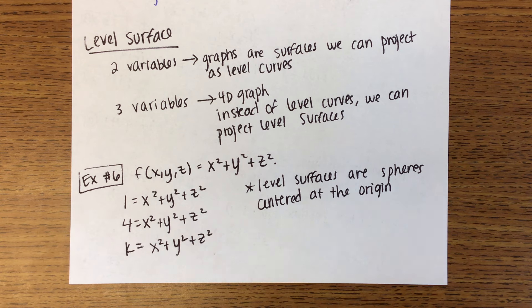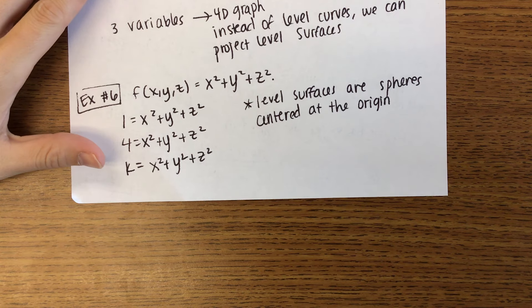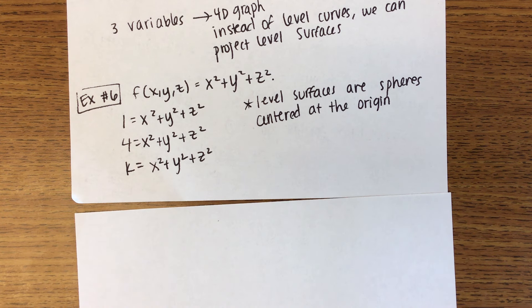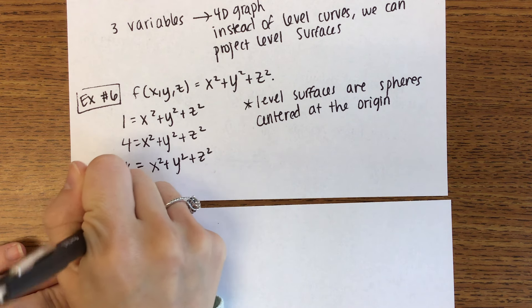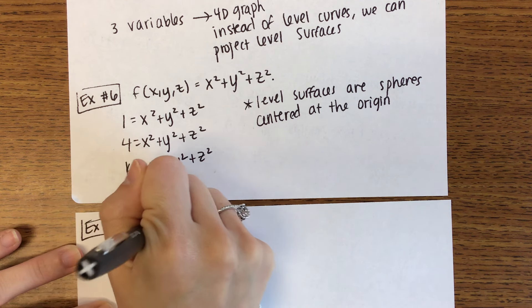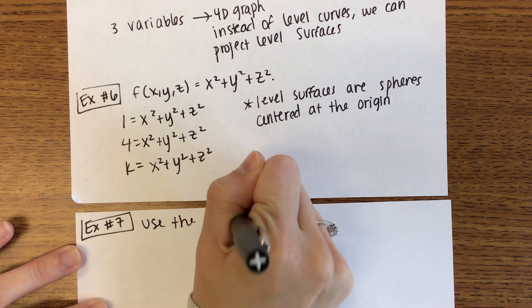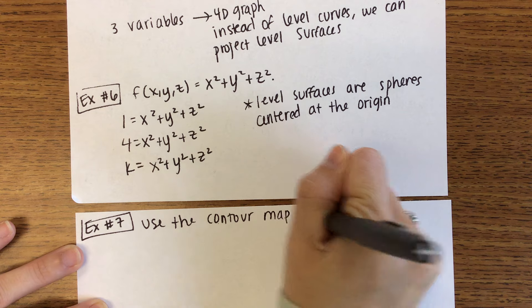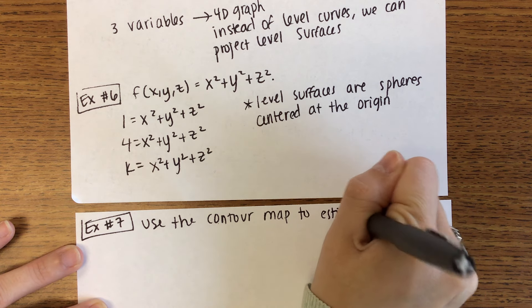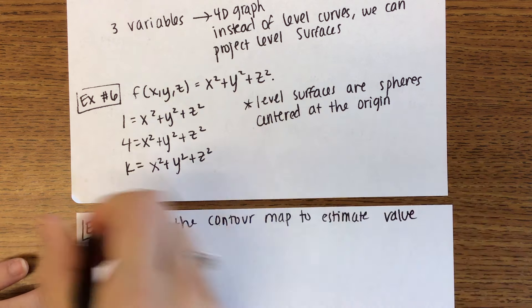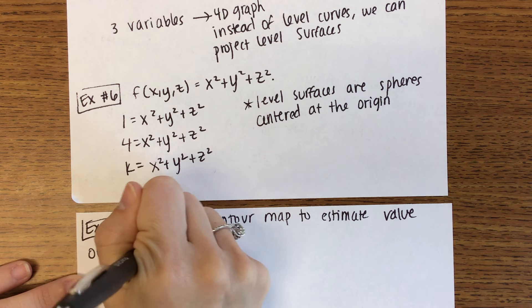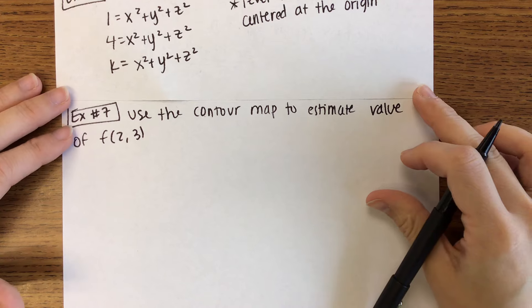Ready to do one more example and then we're done. You are going to use the contour map to estimate the value of f of 2, 3.